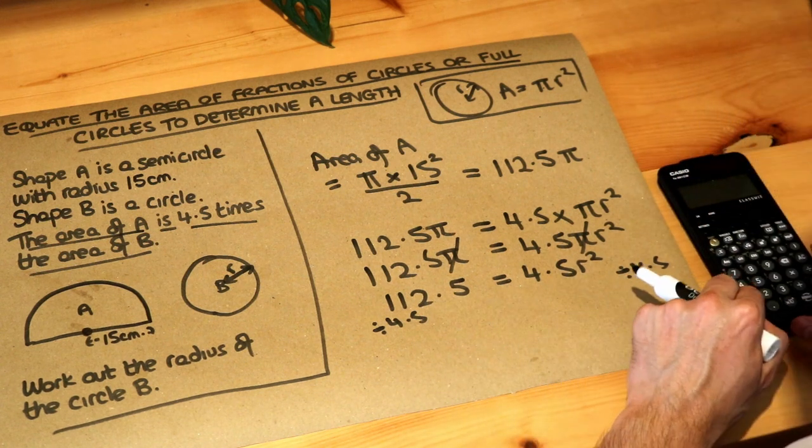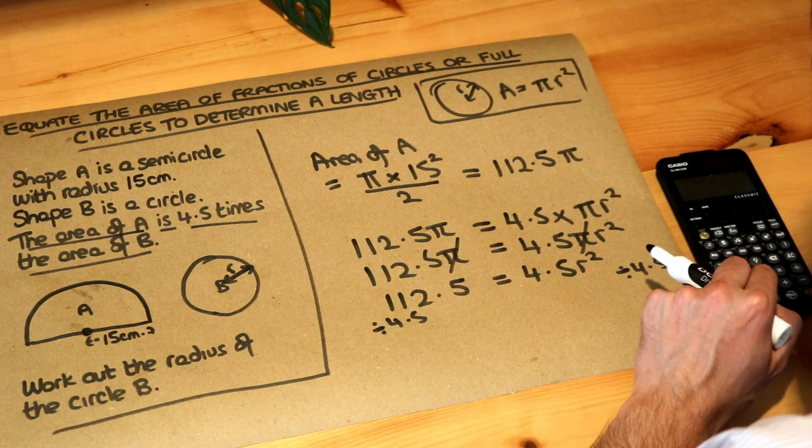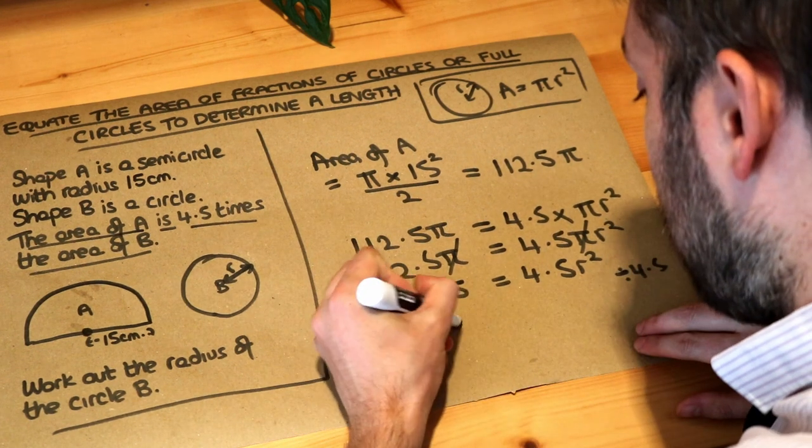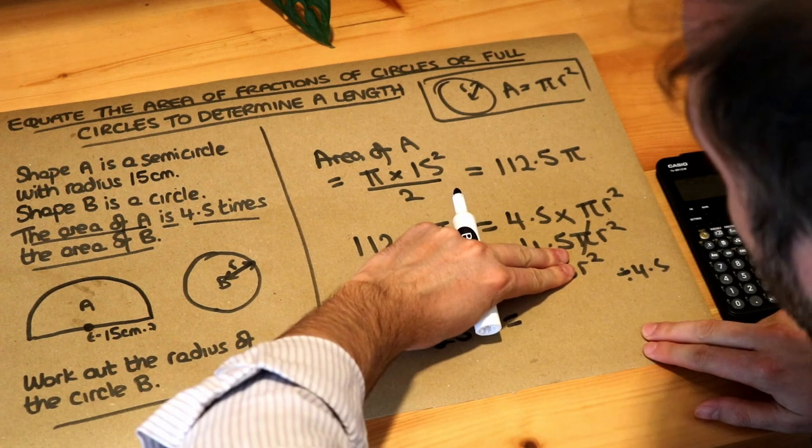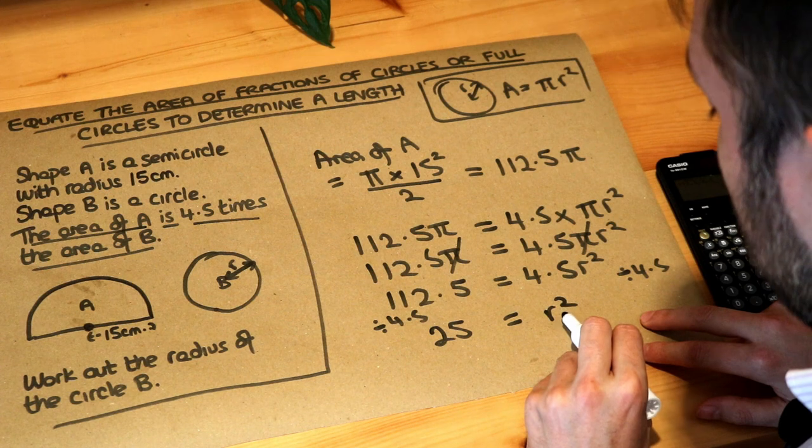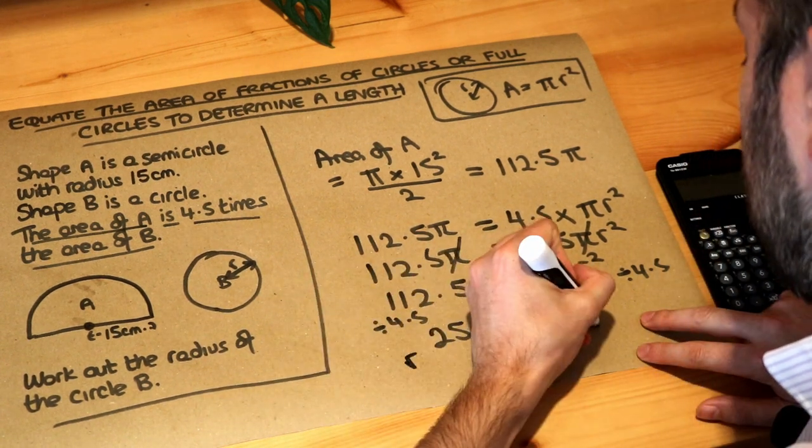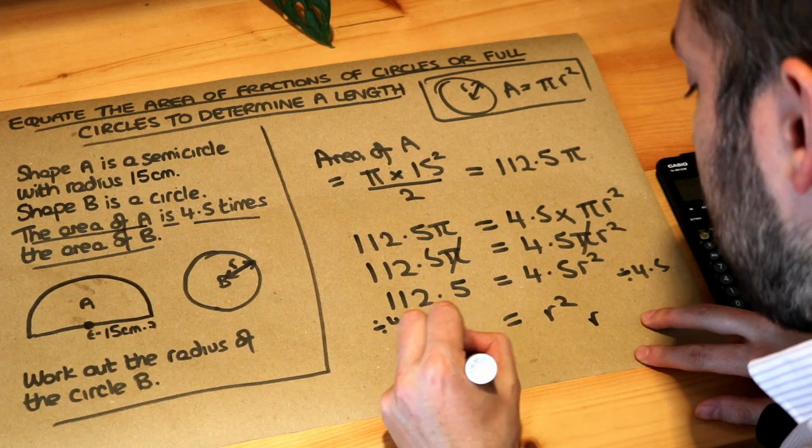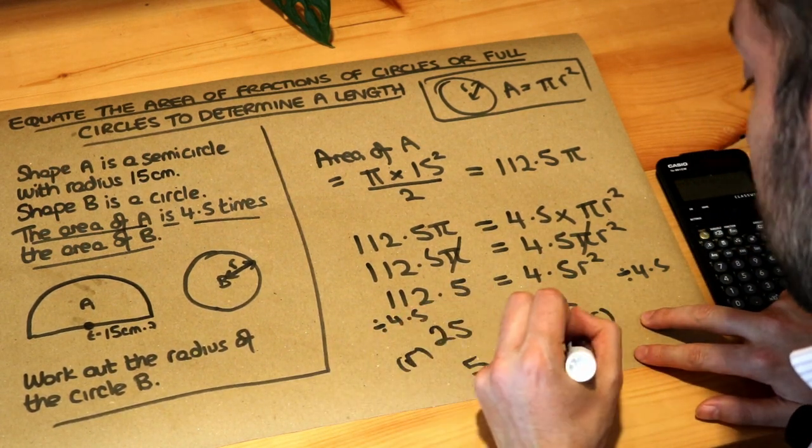So I'm going to do 112.5 divided by 4.5, and that is conveniently 25. And then when I divide this by 4.5, it just gets rid of the 4.5, leaving just R². And then how do you get rid of the squared? What squared is 25? Well, to get rid of the squared you just square root both sides. The square root of 25 is 5, and the square root of R² is just R.